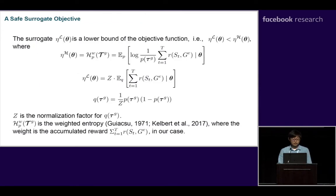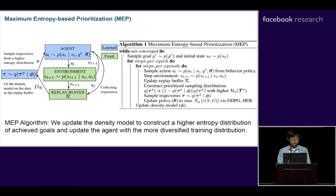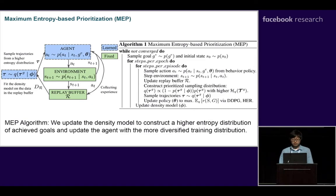However, this objective is unbounded. We propose a safe surrogate objective, which is proven to be a lower bound of the original objective. To optimize the derived surrogate objective, we developed this maximal entropy based prioritization framework. The agent collects trajectories into the replay buffer, and at each epoch we use a latent variable model to estimate the underlying goal distribution in the replay buffer. Based on this distribution p, we construct a proposal distribution proportional to (1 minus p) multiplied by p, and we prove that this new distribution has higher entropy than the original. Trajectories are then sampled from this new distribution and the policy is updated using DDPG and hindsight experience replay.